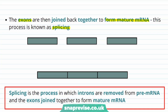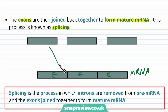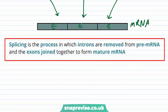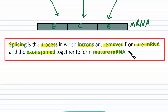The result is a mature mRNA with a continuous stream of exons all joined together into one molecule. This can be read from end to end without any interruptions by introns, and it codes for the whole protein. As a definition: splicing is the process in which introns are removed from pre-mRNA, and then the exons are joined together to form mature mRNA.